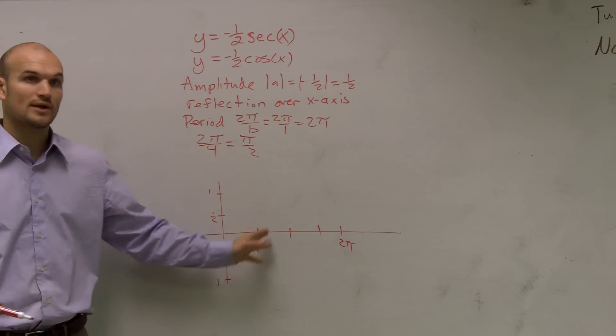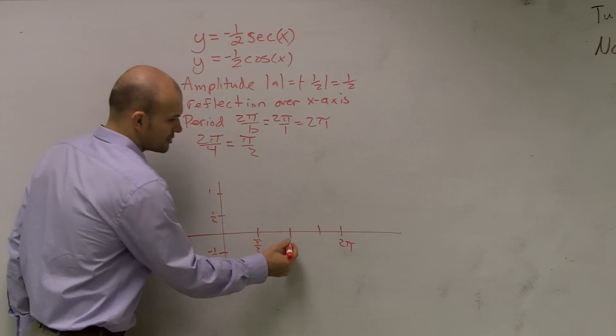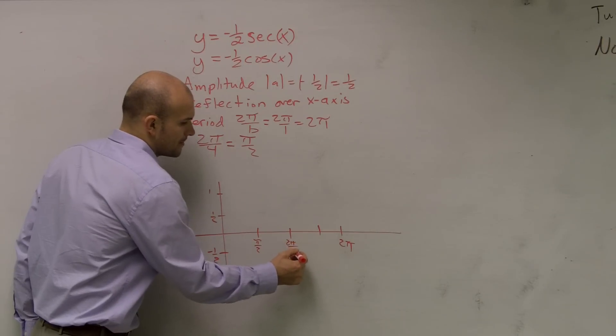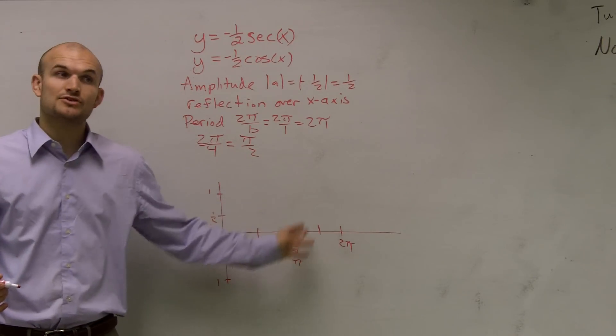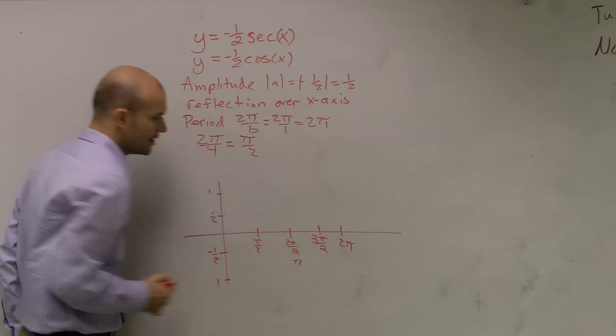The next point would be π over 2 plus π over 2, which is 2π over 2, or just π. Then I add another π over 2. π over 2 plus π gives me 3π over 2.